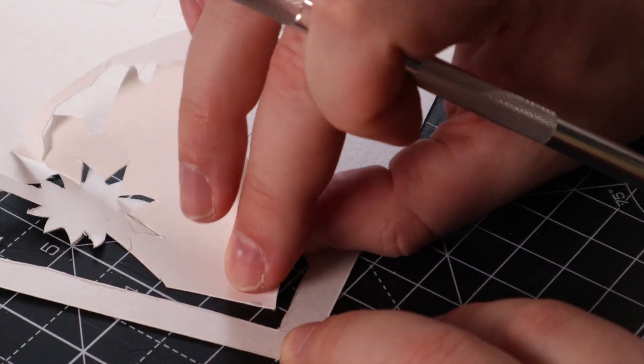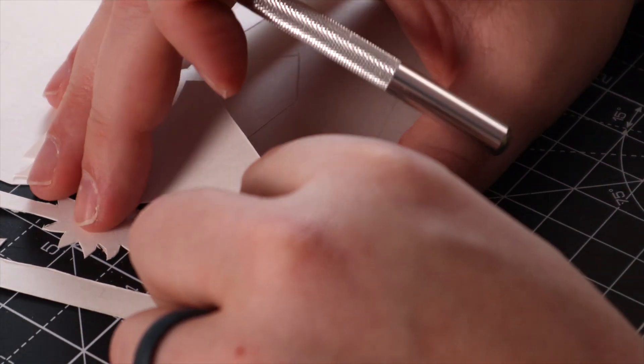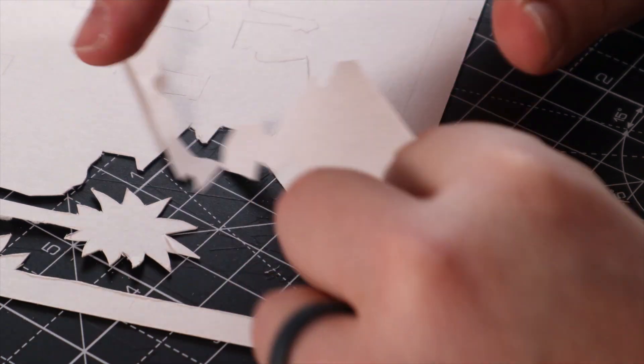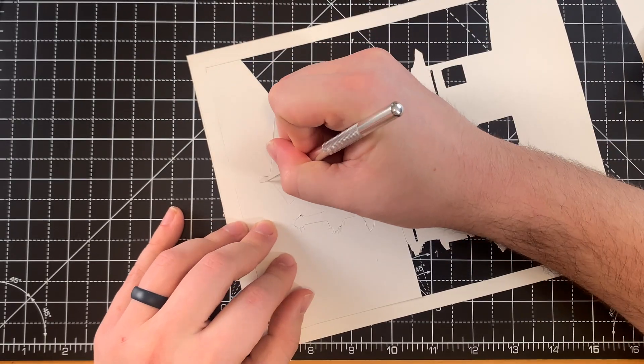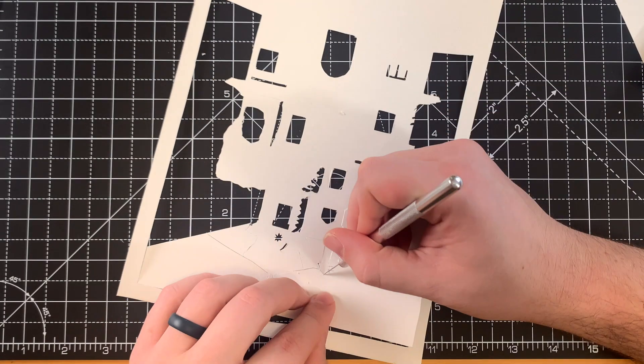Once you've finished your layers, you can start overlaying them to see what it looks like. Make any cuts to fix anything that doesn't match up. Keep in mind that there will be space between each layer, so the perspective will change when you put it all together.